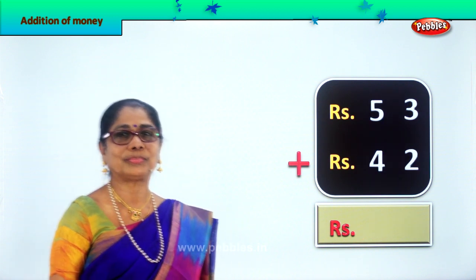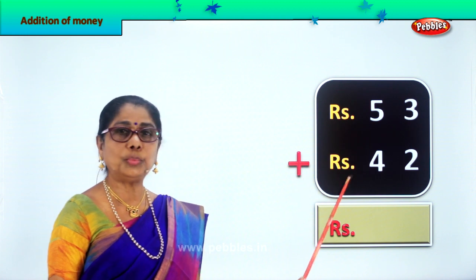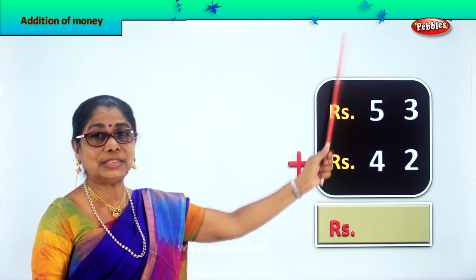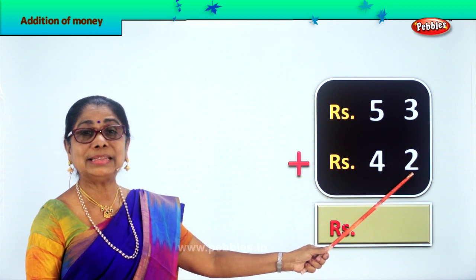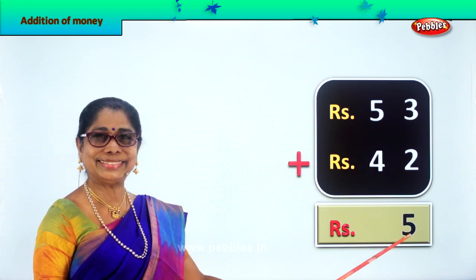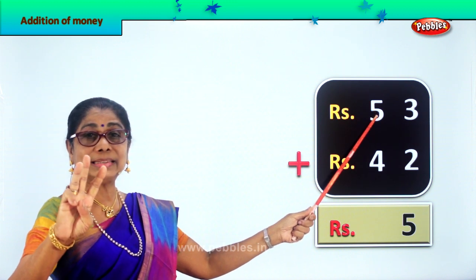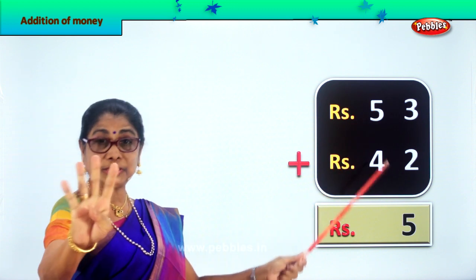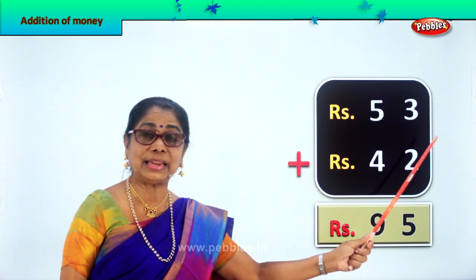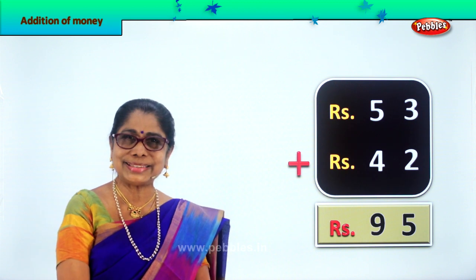Let's take another sum. We are given rupees 53 plus rupees 42. We go to the ones place. 3 rupees plus 2 rupees. 3 plus 2 is 5. So we write 5 here. Next, the tens place: 5 plus 4. 5 plus 4 is 9. So we write 9. Rupees 53 plus rupees 42 is equal to rupees 95. Did you enjoy the exercise? Good.